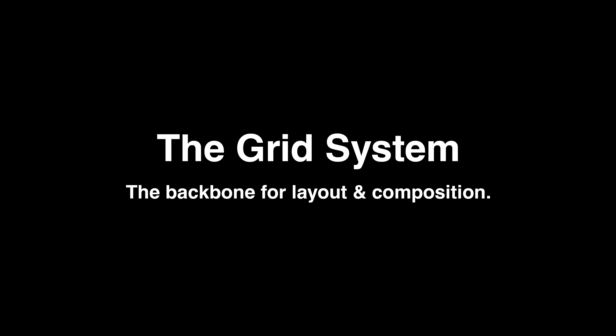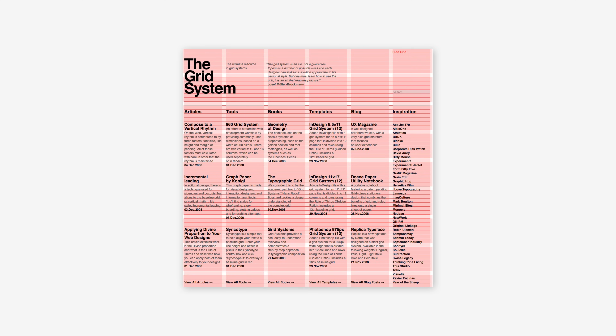The grid system is a fundamental aspect of Swiss design, serving as the backbone for layout and composition. The use of grids provides a structured framework that helps to organize content in a logical and readable manner, ensuring that elements are aligned and spaced consistently to create a harmonious and balanced appearance.